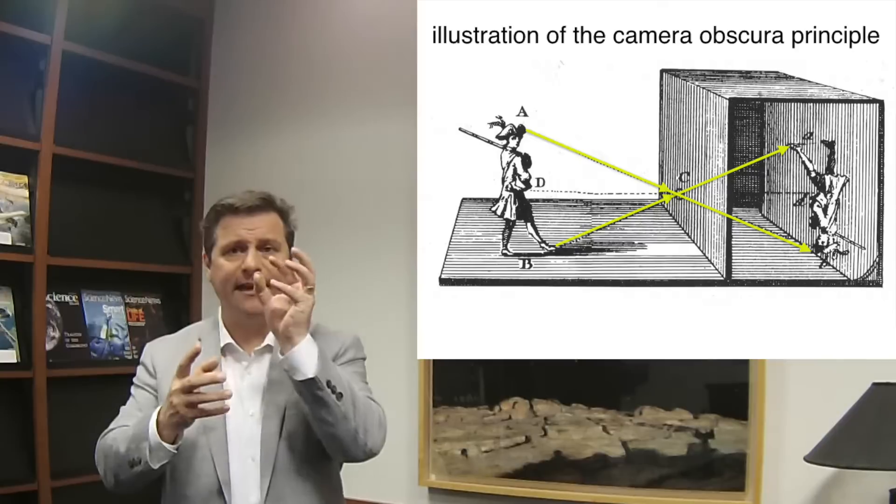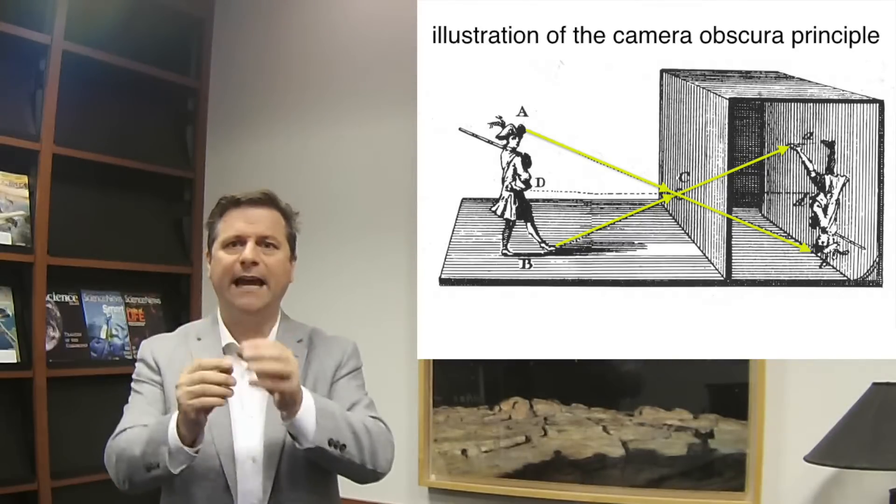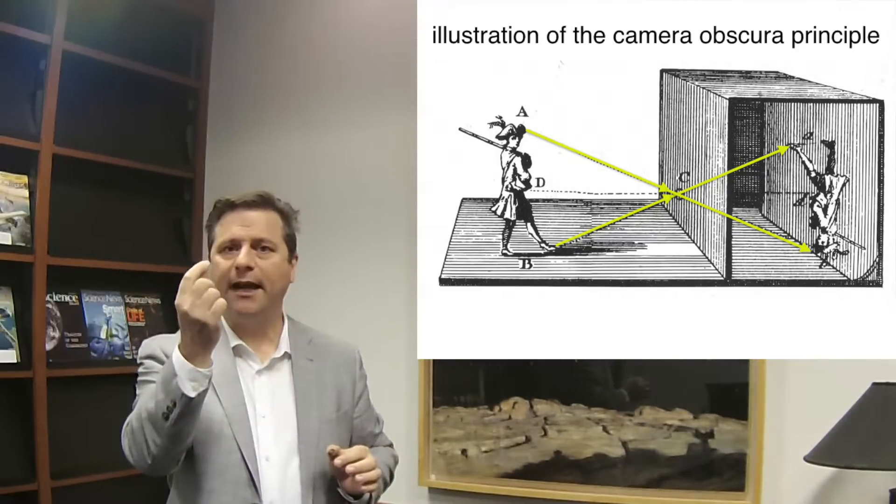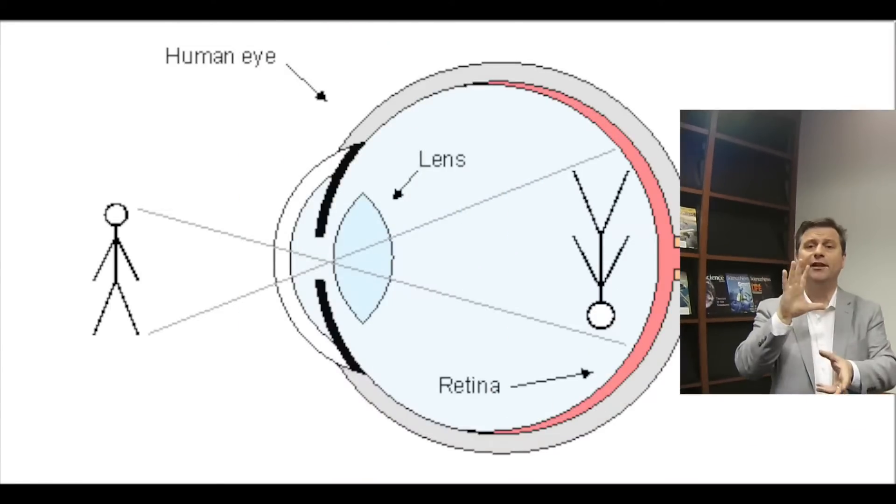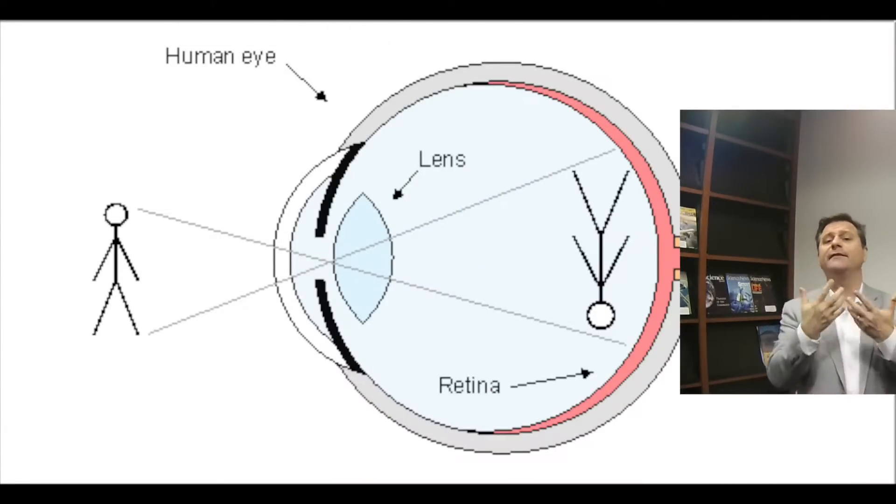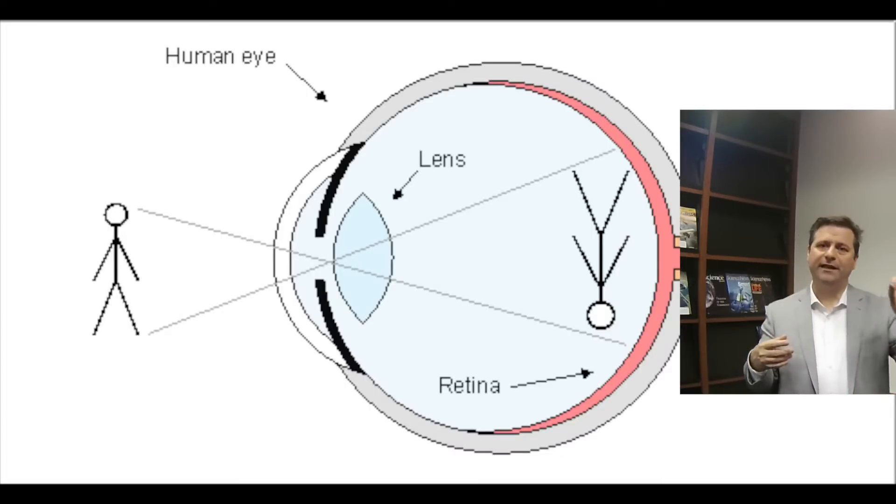When he thought about this he said, 'Wait a second, the eye is like a little tent and the iris of the eye, where the pupil of the eye is, is where the light comes in.' It gets inverted and the eye then acts like the tent, and the pupil of your eye acts like the lens. So the camera obscura - the tent with one little hole in it - is exactly analogous to what the eye does.